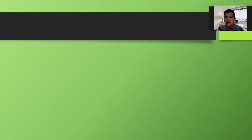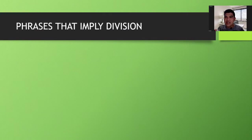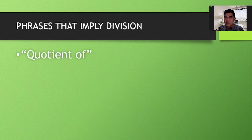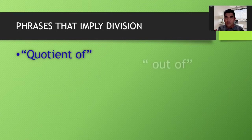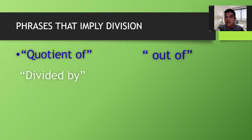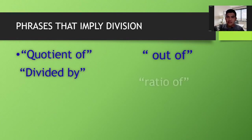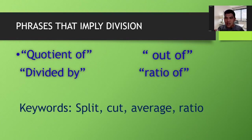Now let's have the phrases that imply division. The first one is quotient of, out of, divided by, ratio of. The keywords here are: split, cut, average, ratio.